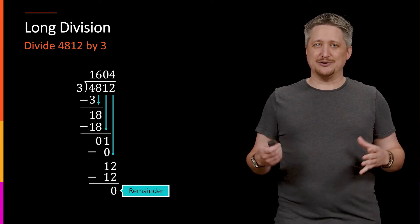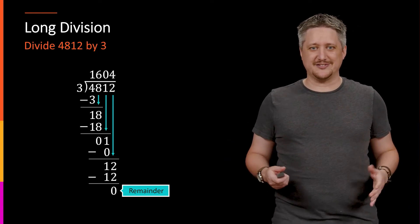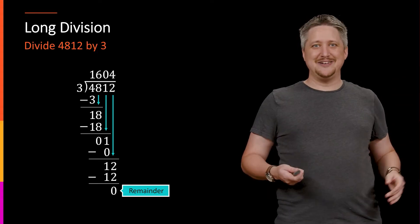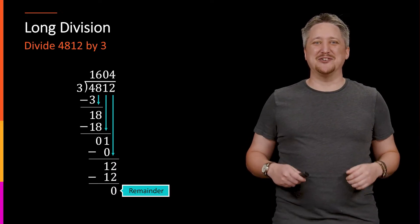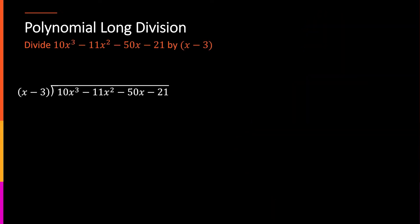So, now that you're probably half asleep, because this is math from probably more than a decade ago for some of you at this point. Now, we'll look at the polynomial version for this. So, again, we want to divide this 10x³ - 11x² - 50x - 21, all divided by x - 3.